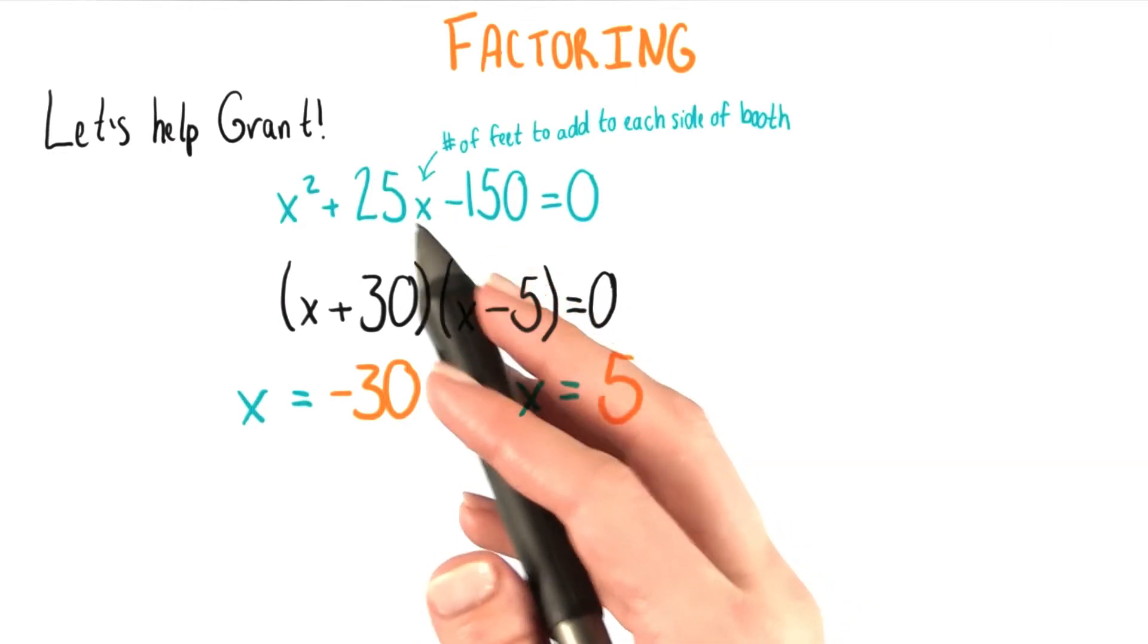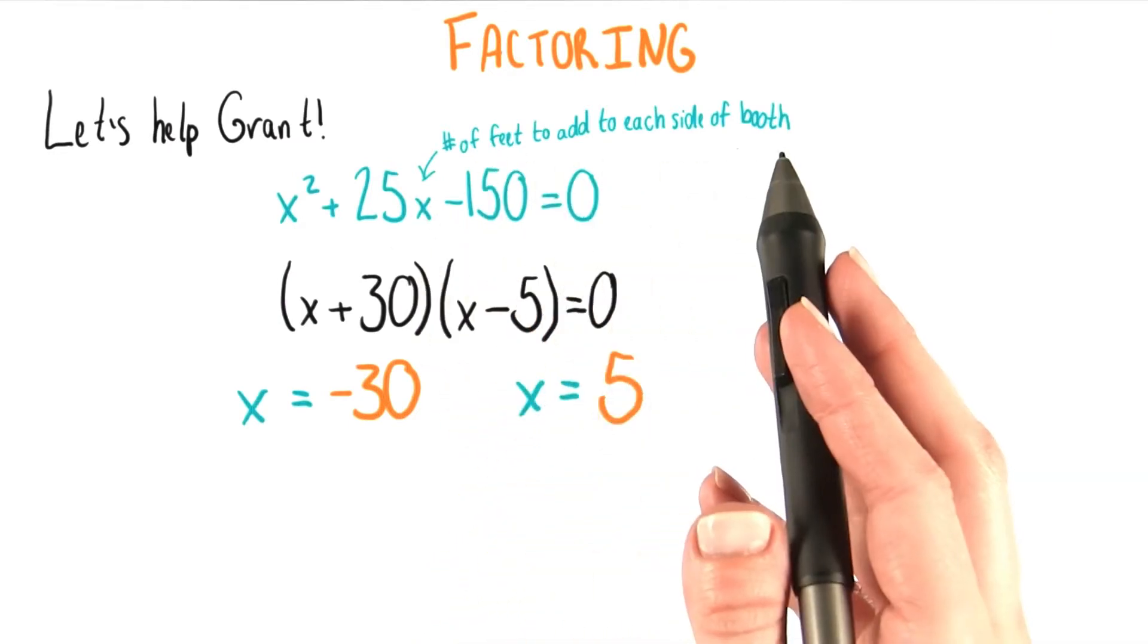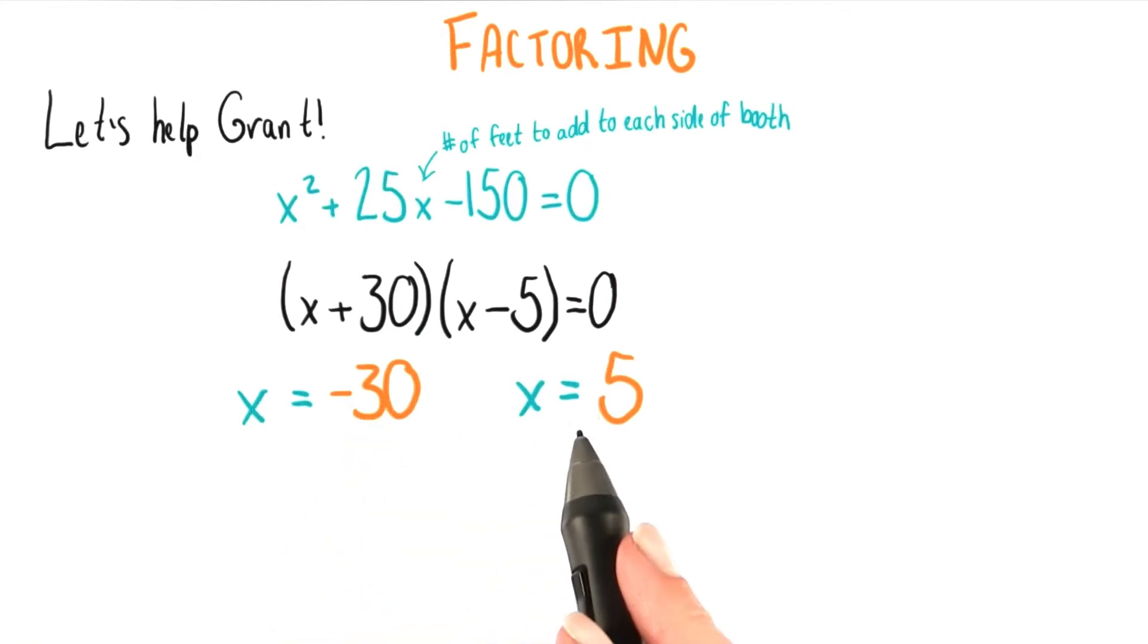The question is, considering what x stands for, remember it's the length that we're adding to each side of Grant's booth. Only one of these two answers really makes sense.